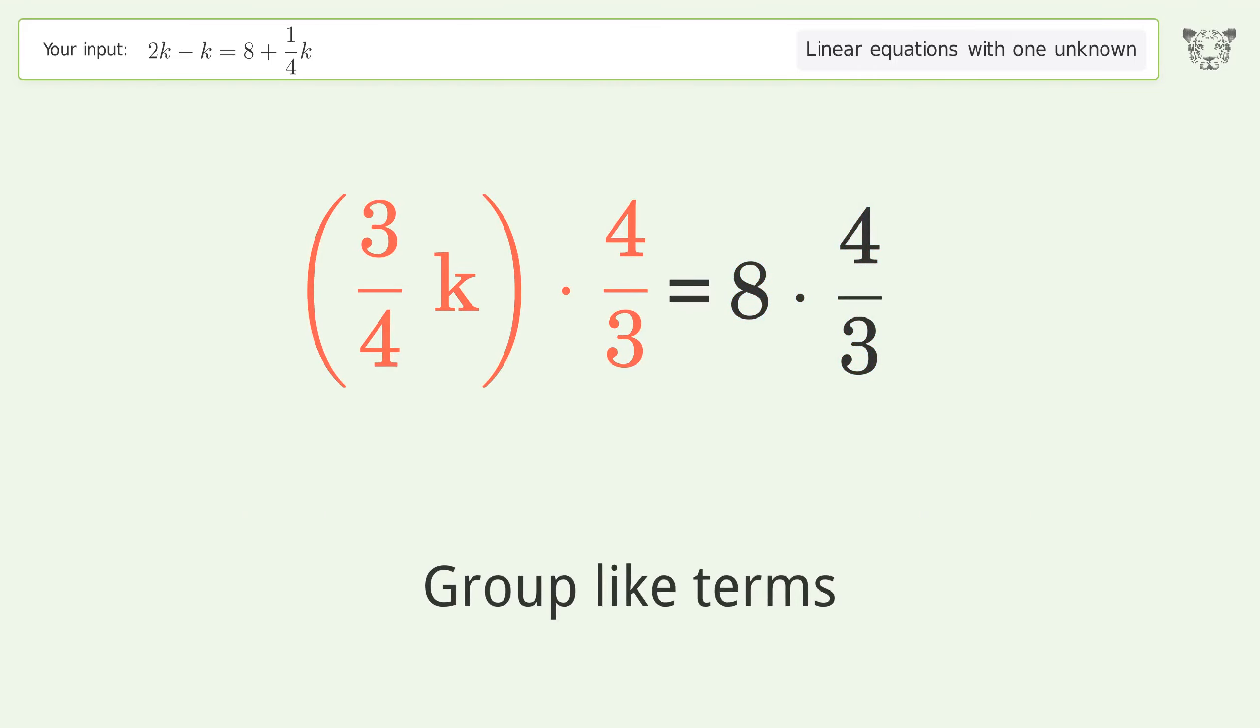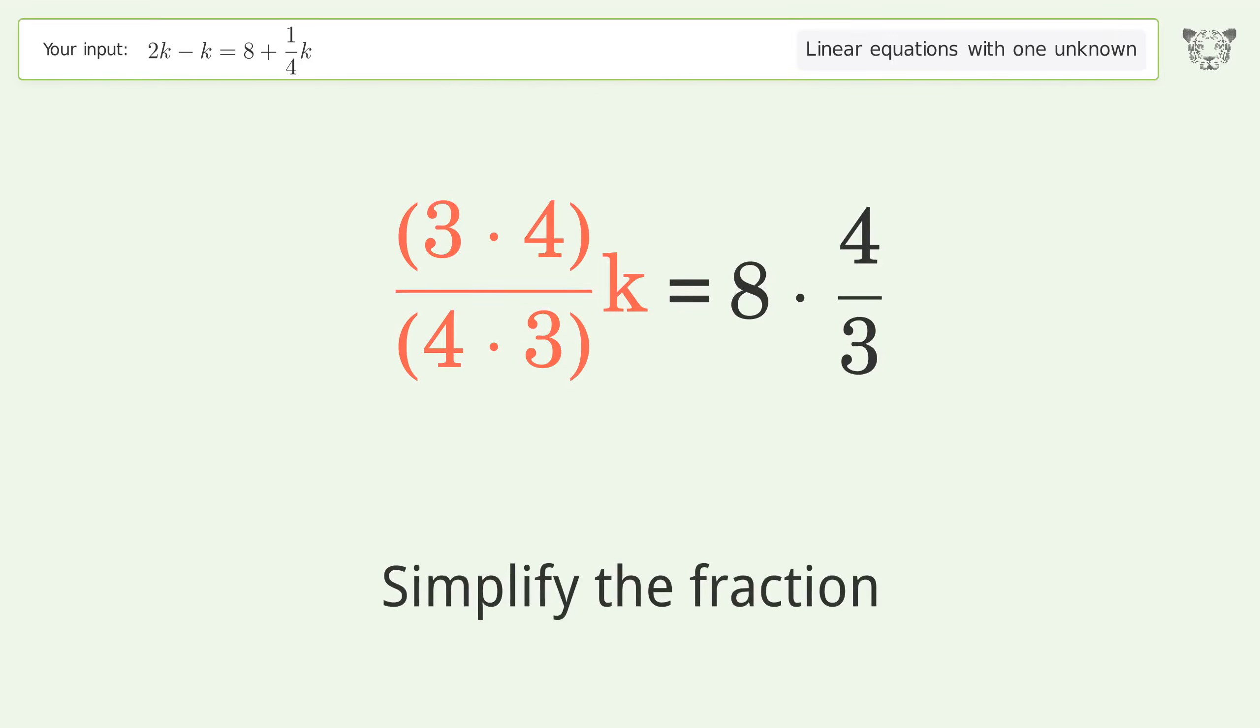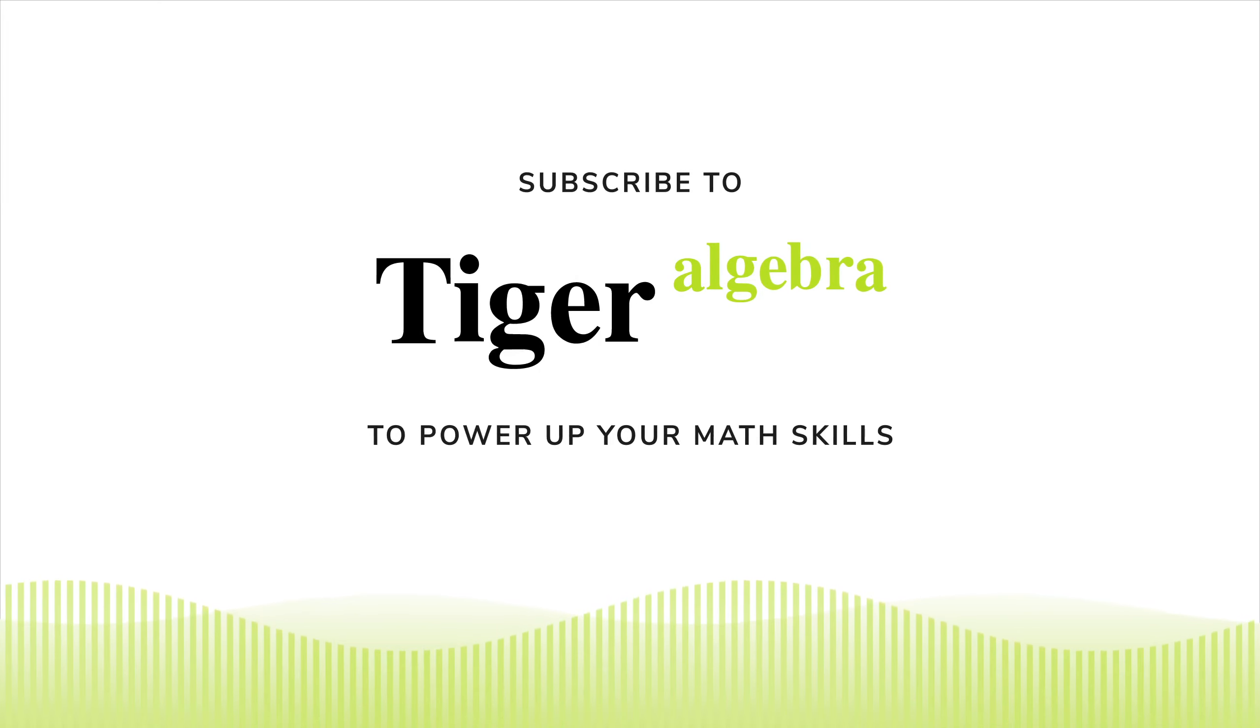Group like terms, multiply the coefficients, simplify the fraction, multiply the fractions, and simplify the arithmetic. The final result is k equals 32 over 3.